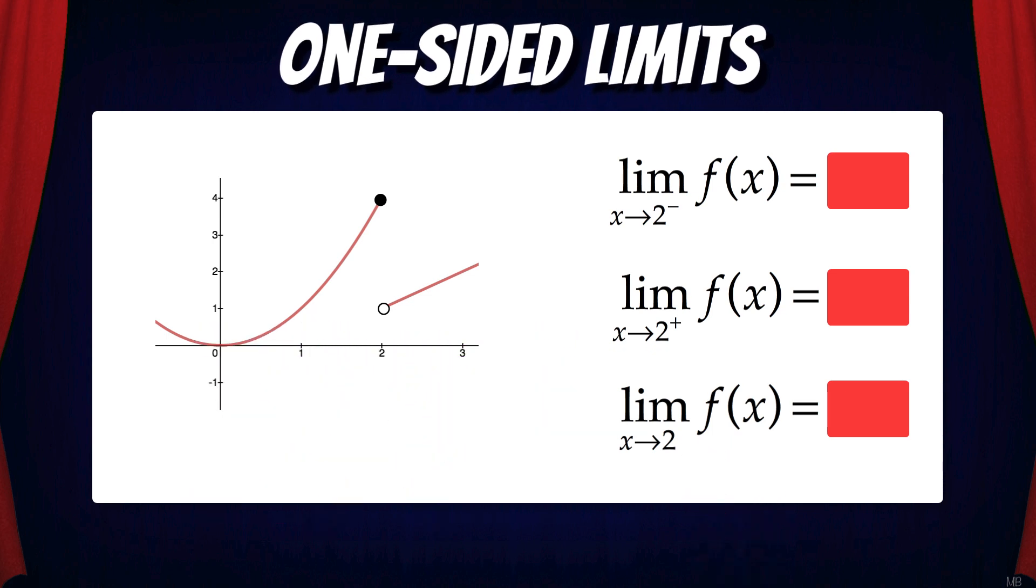So in this case, the limit of f of x as x approaches 2 from the left is 4 because the function is headed towards a height of 4 on the left side.